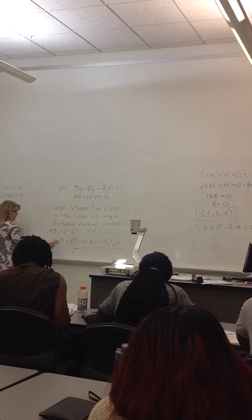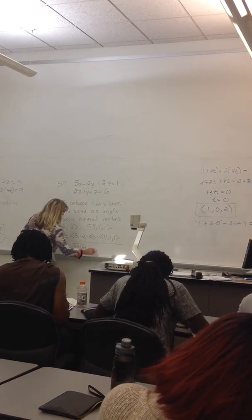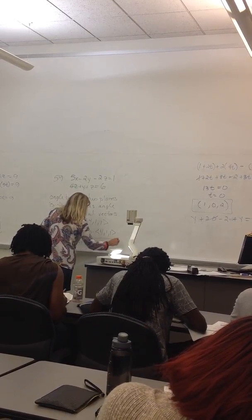So the length of this one will be the square root of 25 plus 4 plus 4. And the length of this one will be the square root of 16 plus 1 plus 1.